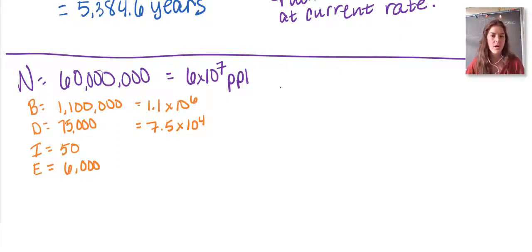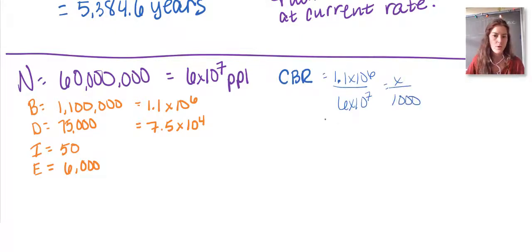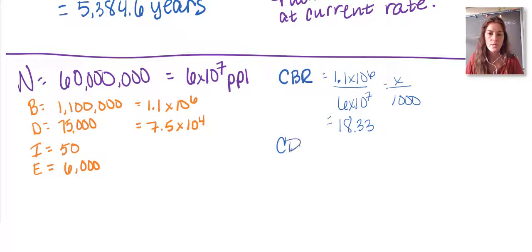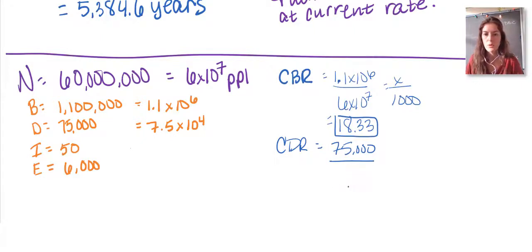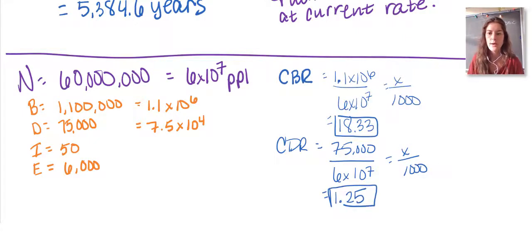In your calculator, type scientific notation as 6 E 7. For crude birth rate: 1.1 × 10⁶ out of 6 × 10⁷ equals x over 1,000 — CBR = 18.33. For crude death rate: 75,000 deaths out of 60 million (6 × 10⁷) equals x over 1,000 — CDR = 1.25.